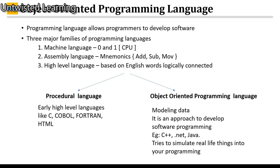There are three major families of programming languages. First is machine language which includes 0 and 1 programming. Second is assembly language, which is based on mnemonics like add, sub, move. And the third is high level language, which is based on English words which are logically connected — the language understands what you want to say.